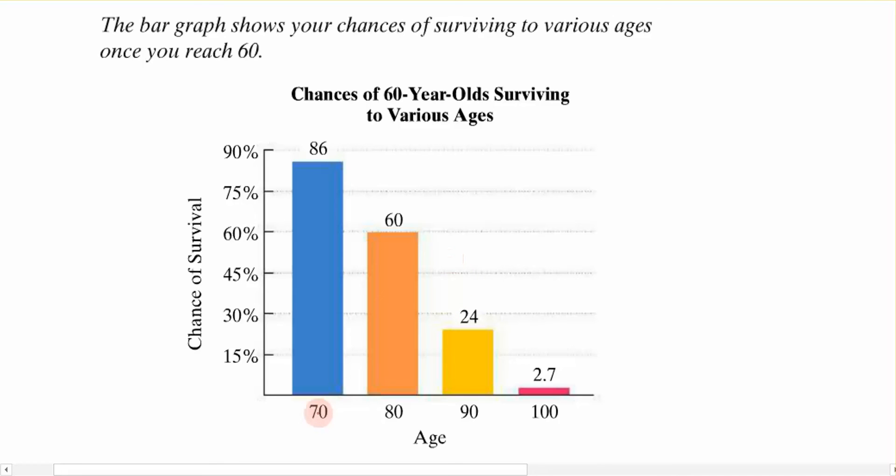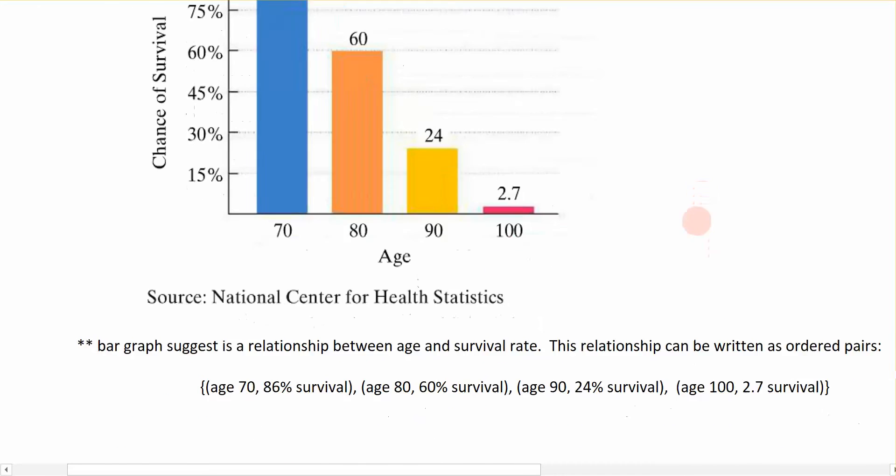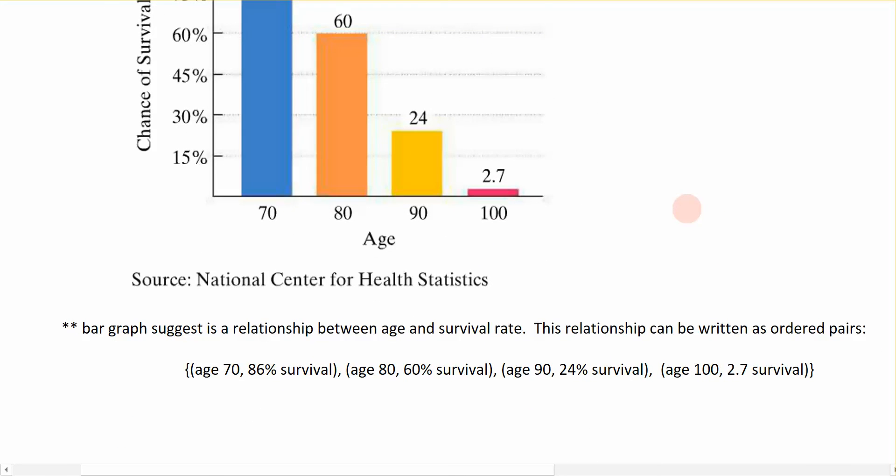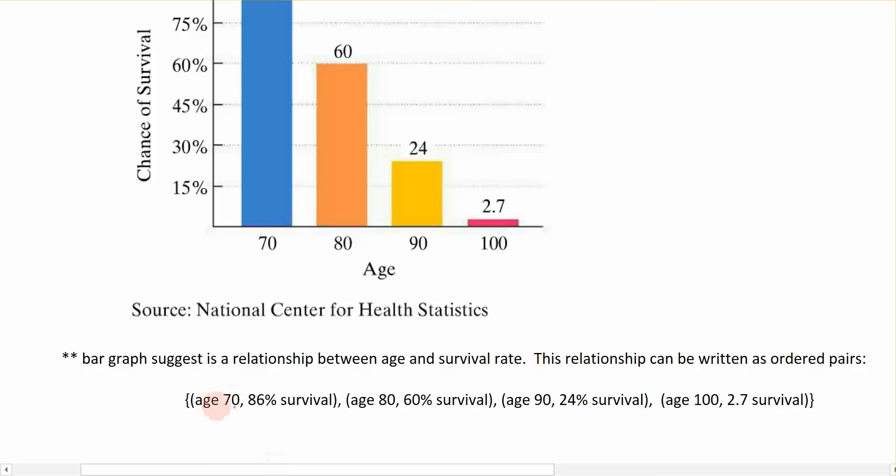Now there is a direct correspondence between your age and your survival rate according to the data that is shown here. And when we have that direct correspondence, we can represent that correspondence mathematically in ordered pairs like we're used to seeing. So the ordered pair that would be represented by the data that's in that chart would look something like this. This is the set of data contained in that chart.